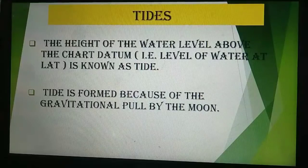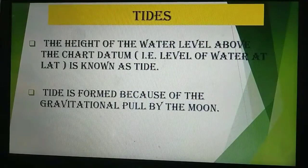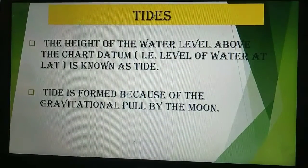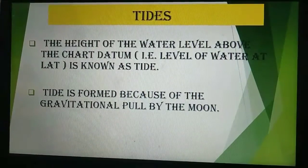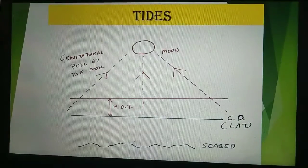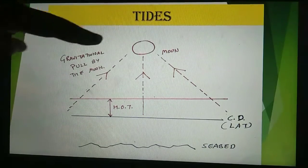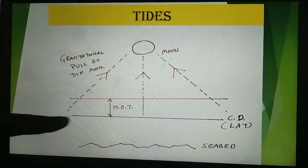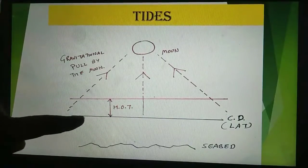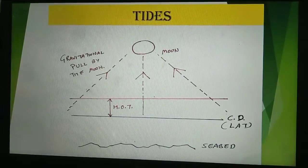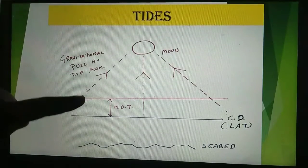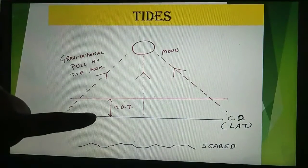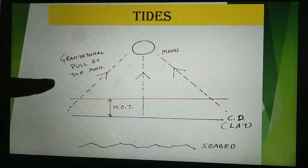The height of the water level above the chart datum — that is, the level of water at the lowest astronomical tide — is known as tide. Tide is formed because of the gravitational pull by the moon. Chart datum is a reference, or you can say it is the water level at the lowest astronomical tide. The height of the water level above that chart datum is known as height of the tide, and this is caused by the gravitational pull of the moon.